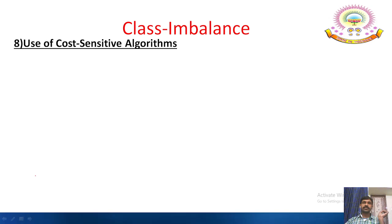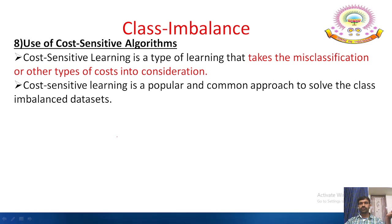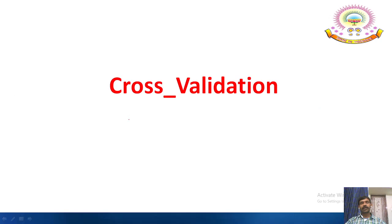Use of cost sensitive algorithms: cost sensitive learning is a type of learning that takes misclassification costs into consideration, and it is a popular approach to solve class imbalanced datasets. Popular machine learning libraries such as support vector machines, random forest, decision trees, and logistic regression can all be configured using cost sensitive training. That covers the topic of class imbalance.